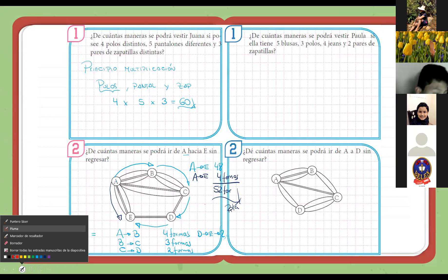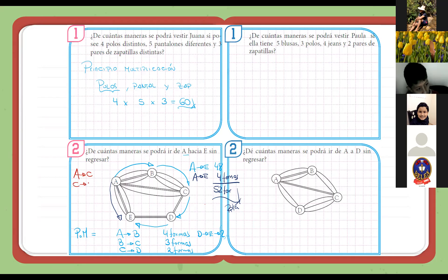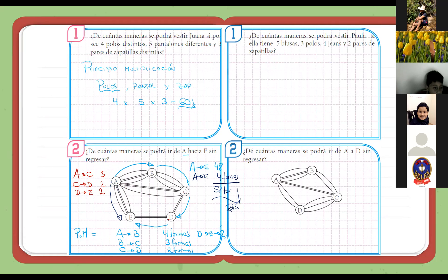Entonces, a ver, voy a ponerla de rojo, ¿ya? De A a C serían cuántas formas. La ruta sería de A a C, C, D y de D a E, ¿no? Esas serían las rutas. De A a C, ¿cuántas formas? Tres. De C a D hay dos y de D a E hay otras dos. Entonces, primero pasamos por una y luego pasamos por las otras. Por lo tanto, multiplicamos.